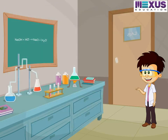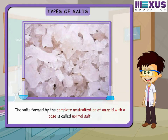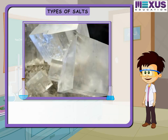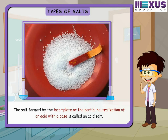There are four types of salts. The salts formed by the complete neutralization of an acid with a base are called normal salts. All hydrogen atoms in an acid molecule are replaced by a metal in this type of reaction. For example, sodium hydroxide reacted with hydrochloric acid gives sodium chloride and water.